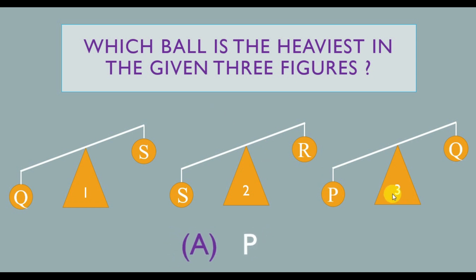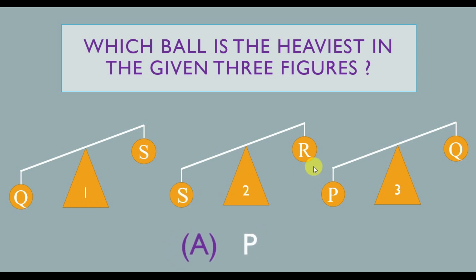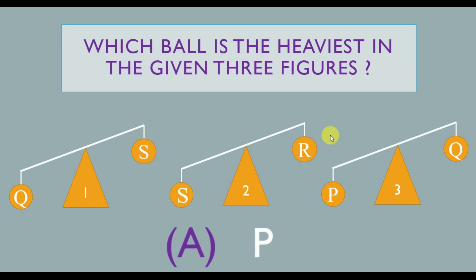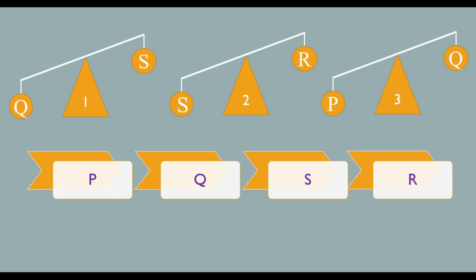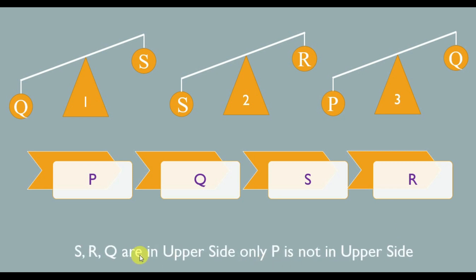Why is P correct? In figure 3, P is the heaviest. Figure 1 shows S as the heaviest in that figure, and figure 2 shows S as well. Comparing all: P is heavier than Q, Q is heavier than S, S is heavier than R. So P is the most heaviest overall — P is above the side while S, R, and Q are not. The answer is P.